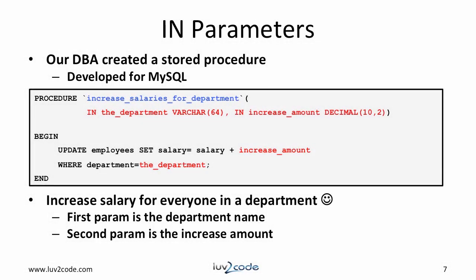Let's start with IN parameters. For this parameter, we are only passing an input parameter and the parameter is read-only. Our DBA has created a stored procedure on the database. This stored procedure will increase the salary for everyone in a department. The procedure takes two parameters: the first is the department name, and the second is the increase amount. For example, we can call this stored procedure and increase the salaries of employees in the engineering department by $10,000.